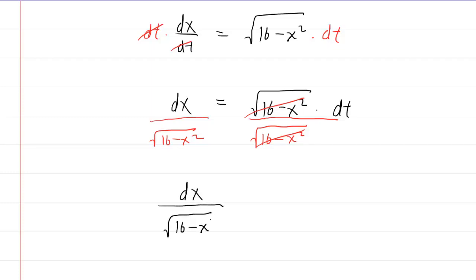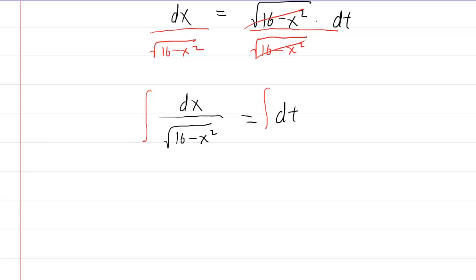The next step, after successfully separating your variables, is to integrate on both sides. The right side is an easy integral. We know the integral of dt is just going to be t. But it's the left-hand side that's a little bit more complicated. Now, we might recall a trigonometric substitution technique that we learned in Calculus 2.